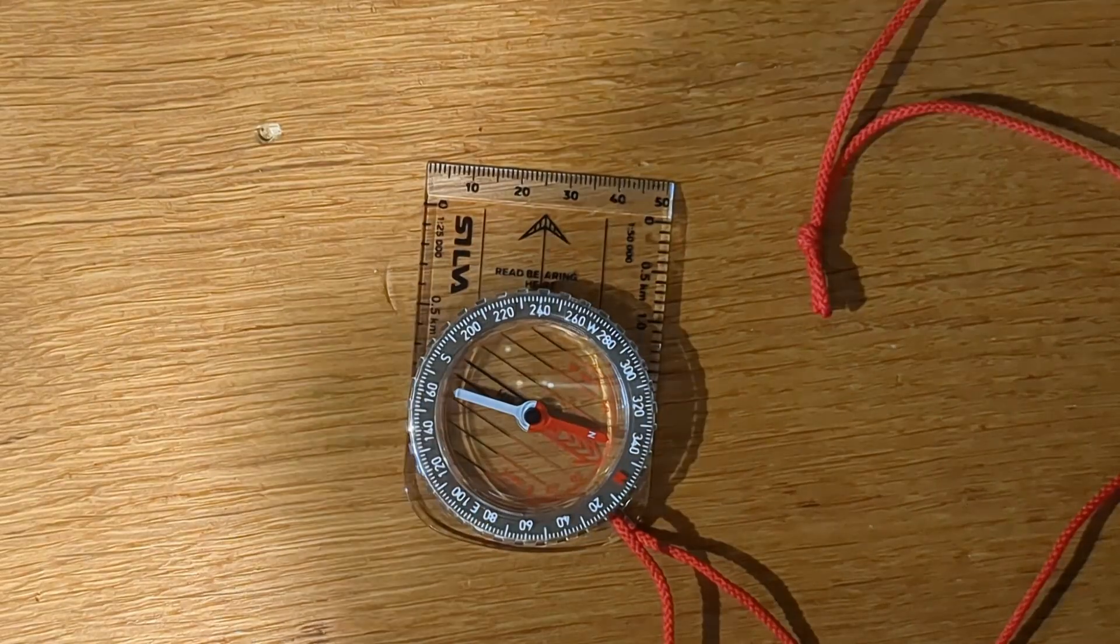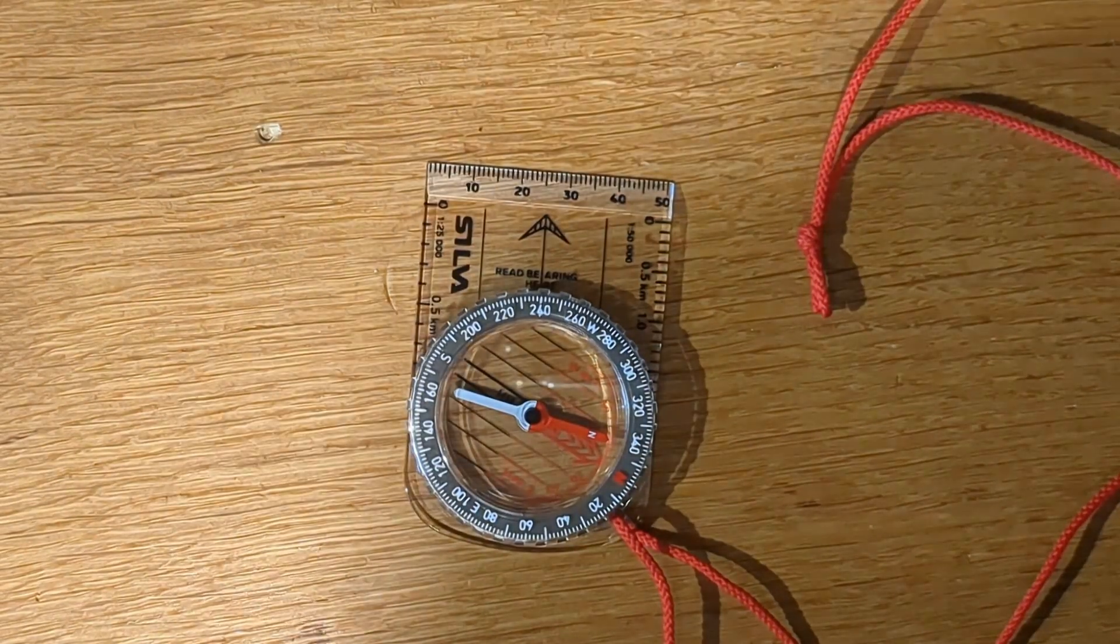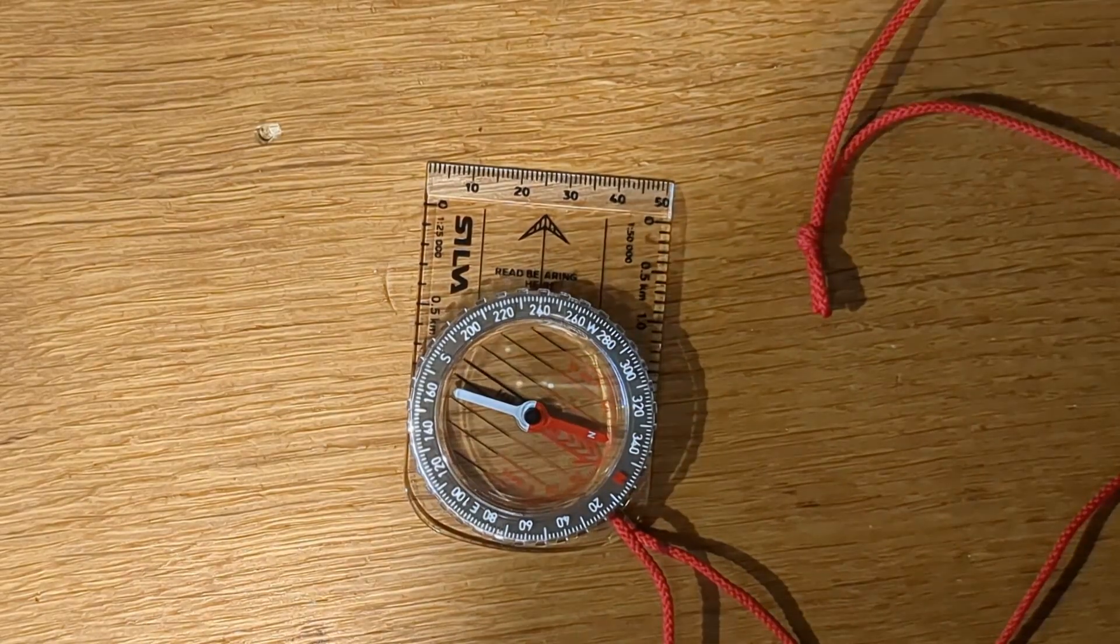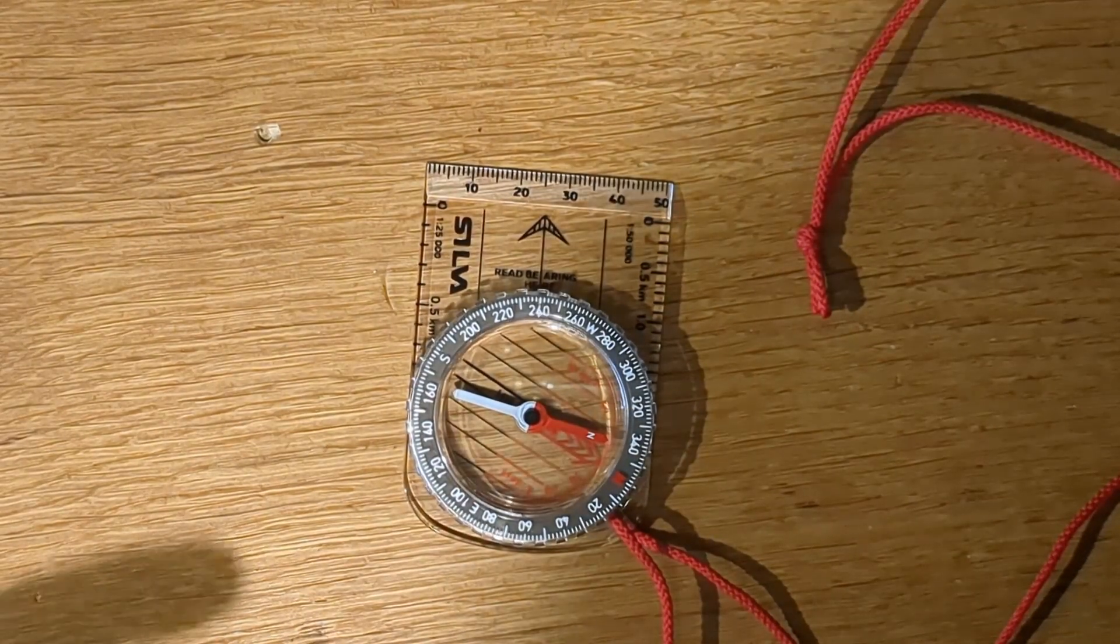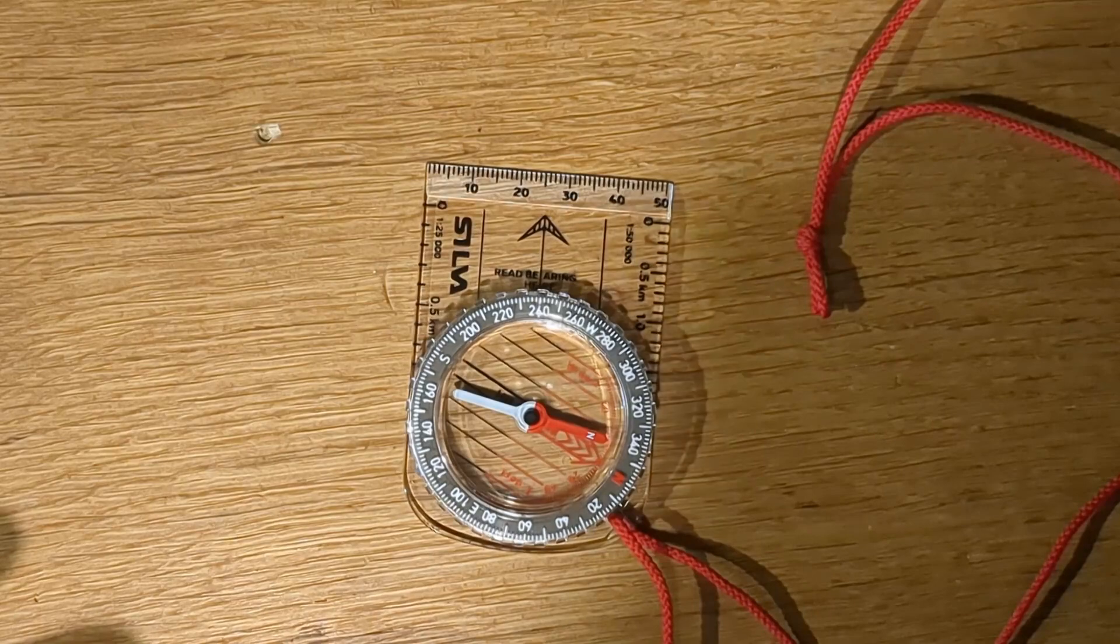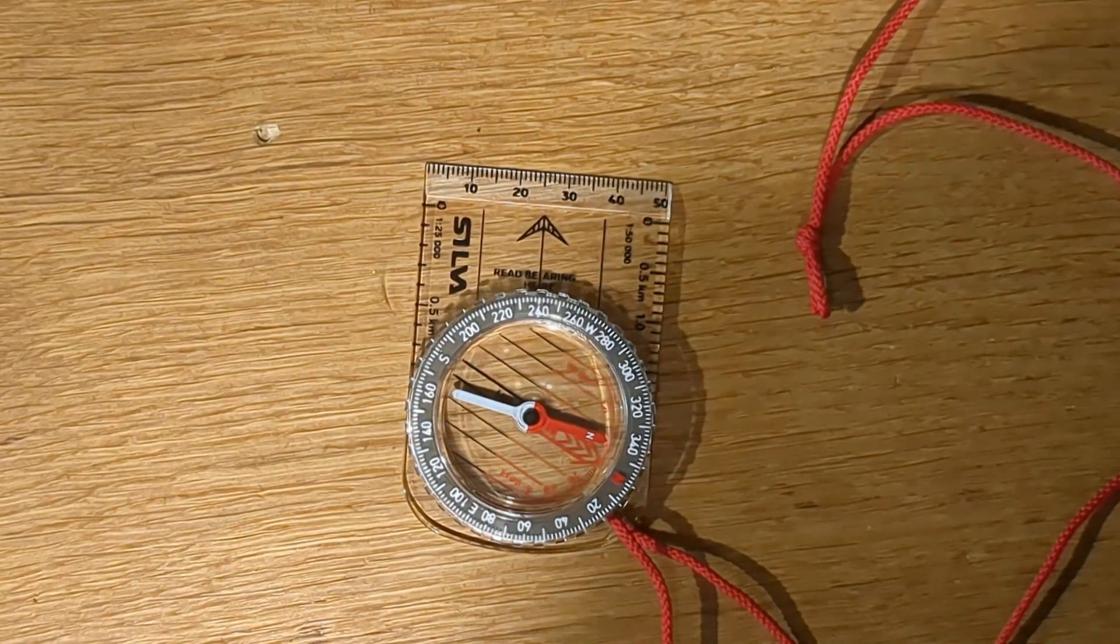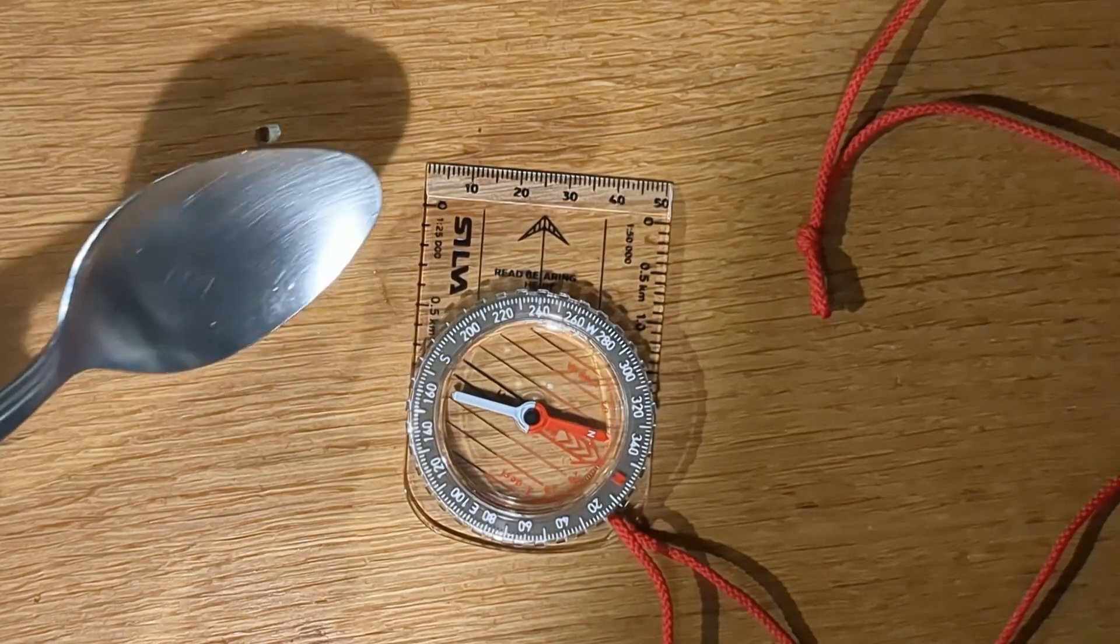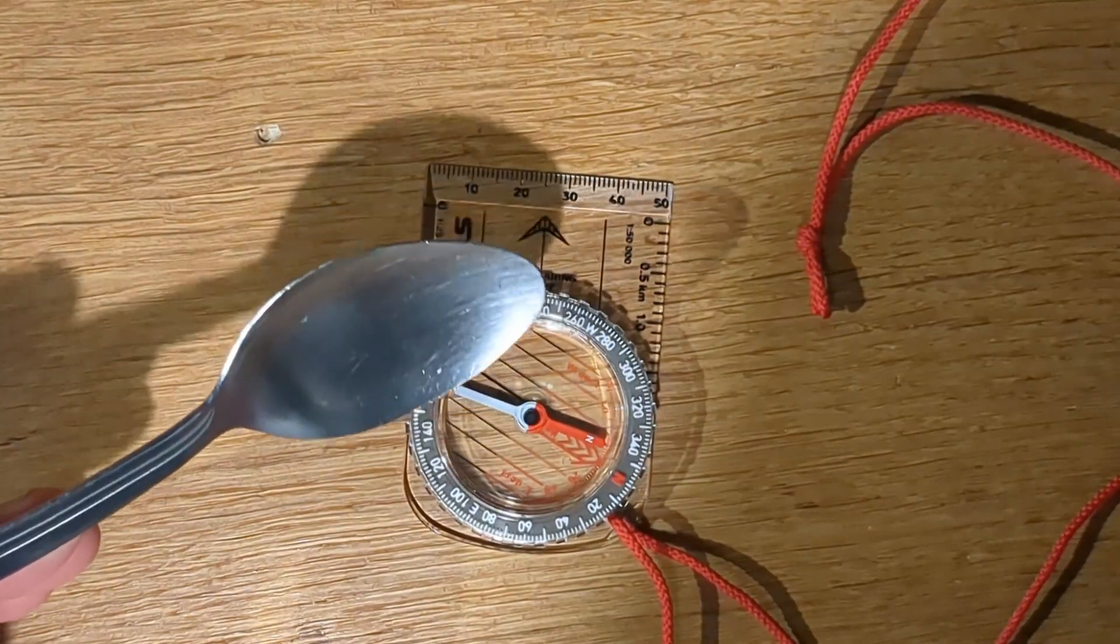But you also need to be careful about metal objects near your compass as well. Those can also lead to the Earth's magnetic field being distorted and can lead to the compass pointing in the wrong direction. The effect is very slight compared to what we just saw, but if you bring this spoon in towards the compass, you can see it's wobbling.